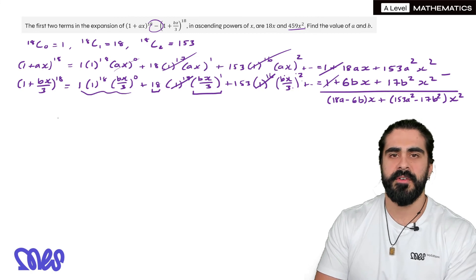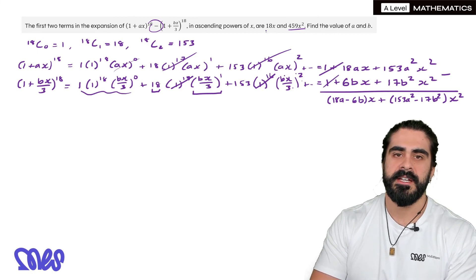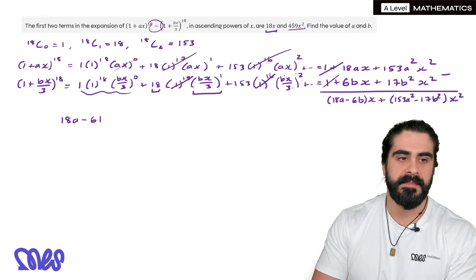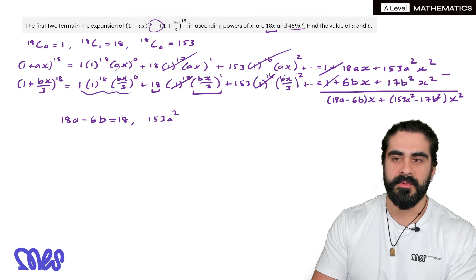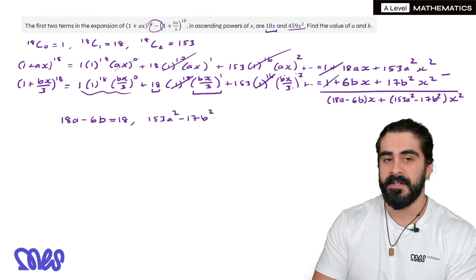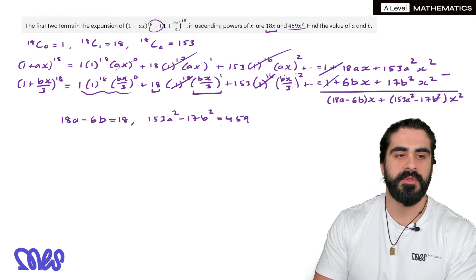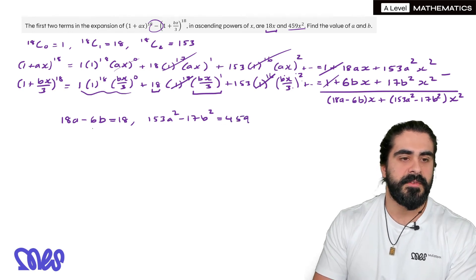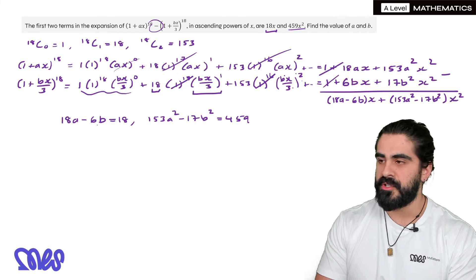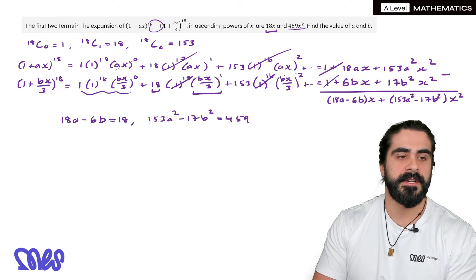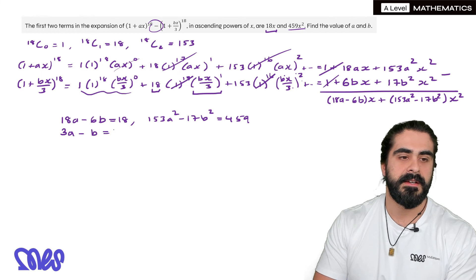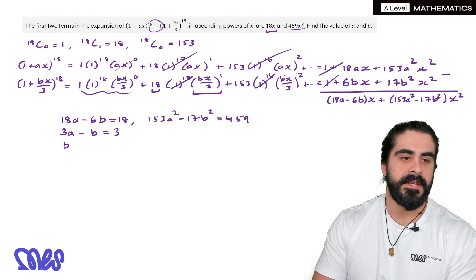So now we can say that the coefficient of x, because you can see that it says 18x. The coefficient 18a - 6b is 18 and 153a^2 - 17b^2 equals 459. And this is just simultaneous equations. So for the first one, we obviously want to rearrange the linear one. So we're going to divide through by 6. So 3a - b = 3. So b is 3a - 3.